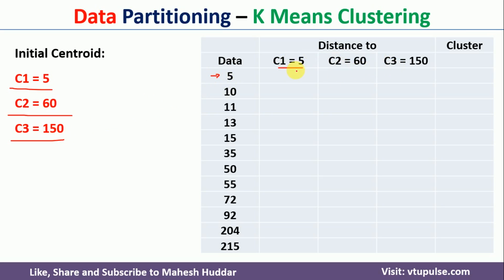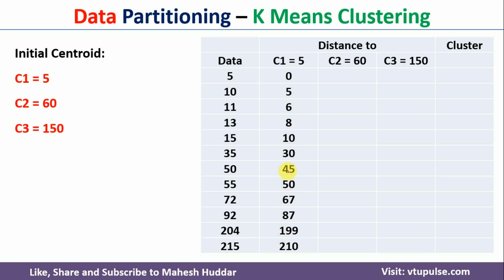To calculate distance you can use any distance measure; here I will use Euclidean distance: the square root of (x2 minus x1) squared plus (y2 minus y1) squared for two-dimensional data. In this case we have only one dimension, so we can directly calculate the absolute difference — for example, 5 minus 5 equals 0, and 5 minus 10 gives an absolute value of 5. You can see those particular distances calculated in the table.